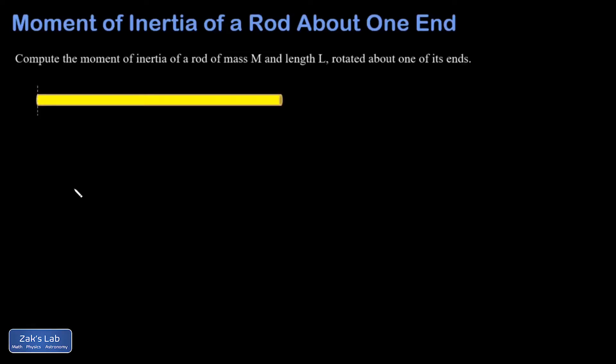In practice, we do a lot of angular dynamics problems where we simply look up a formula for the moment of inertia of some particular rigid body. But these formulas all come from somewhere, and what I want to do here is illustrate just once how you would actually get one of these formulas. In this question, we're asked to find the moment of inertia of a rod of mass M and length L rotated about one of its ends.